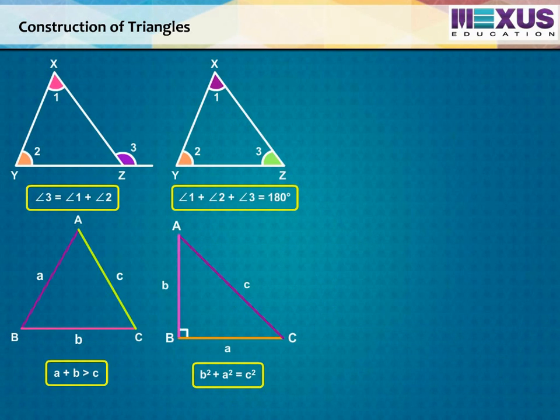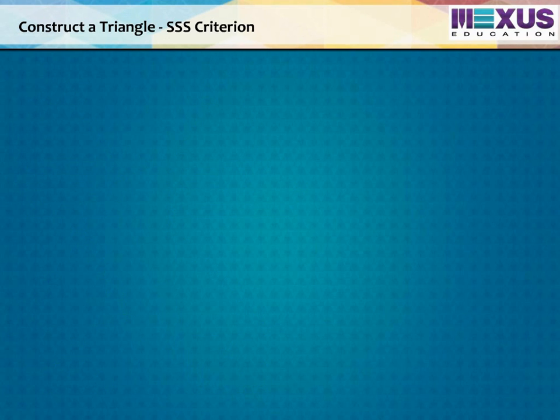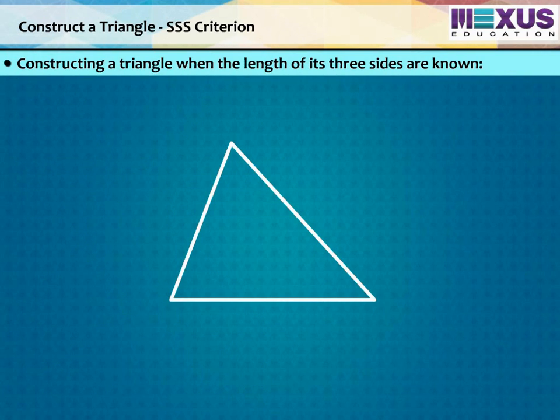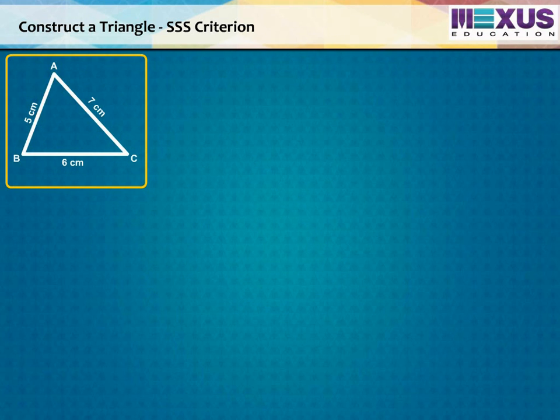By using these properties, we will now construct a triangle if the following set of measurements is given. Let us construct a triangle in which measures of its three sides are given. For a triangle ABC, AB equals to 5 cm, BC 6 cm, and AC is equal to 7 cm. First, draw a rough sketch that can help us to proceed the construction in a correct way. Start with constructing the baseline BC equals to 6 cm.